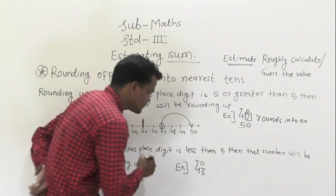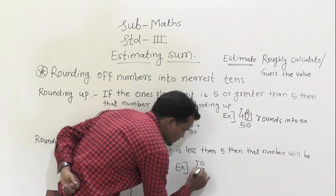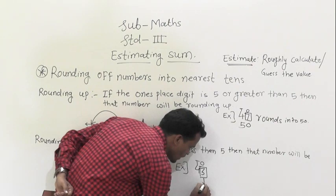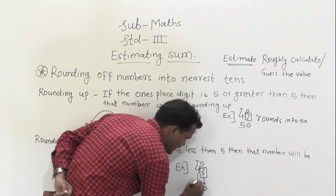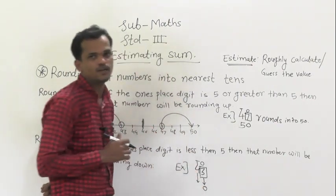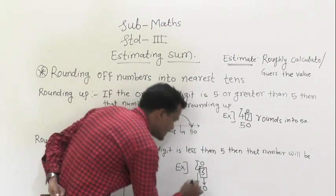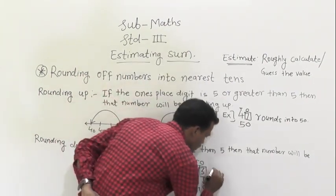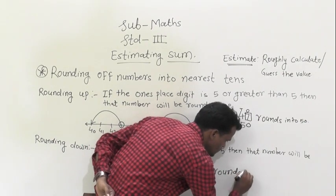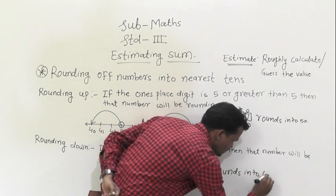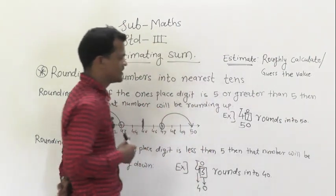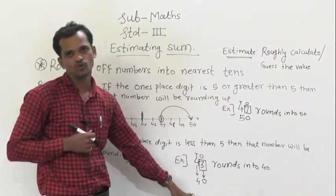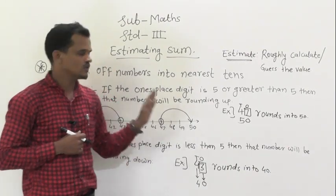So 43 will be rounded down. To round down: the one's place digit is 3, so write 0 at the one's place and keep the ten's place digit as it is. So 43 rounds into 40, meaning 43 is nearest to 40.